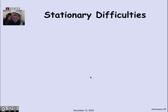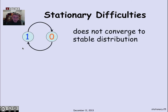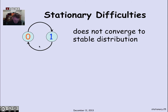There are some problems with stationary distributions to consider. In the example of two states where you alternate between them with probability 1, there may be a stable distribution — one-half, one-half — but this pattern doesn't converge to it. As you go through time, every other step you're at state 1 and every other step at state 0; you never settle into a stable distribution.